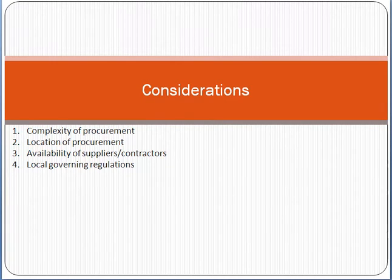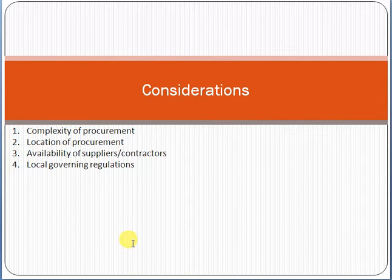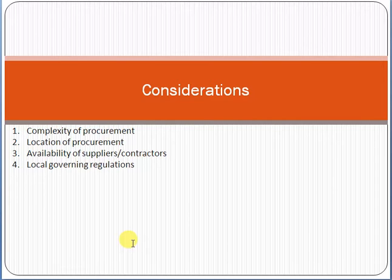Whenever we are making contracts, we must consider a few things. First is the complexity of procurement — procurement means how things will be purchased, what will be the cost, what will be the logistics, and when and how you will deliver. For example, if you want to purchase hardware, which type of hardware, what will be the cost, and how you will deliver it to the company.